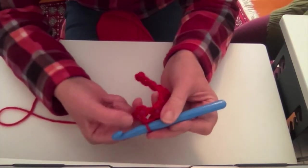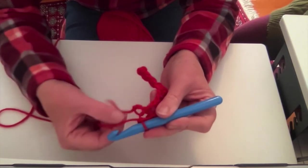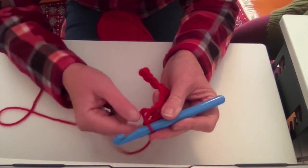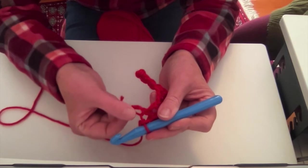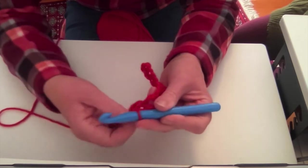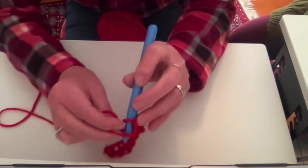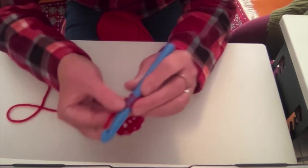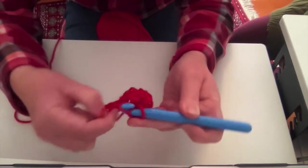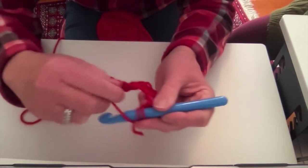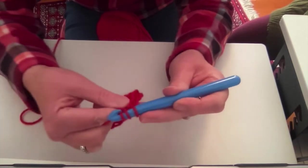All right, you're almost to the end of your row. You have one more loop to go into. So go into your last loop. Down, around once, pull out one. Around, pull out two.